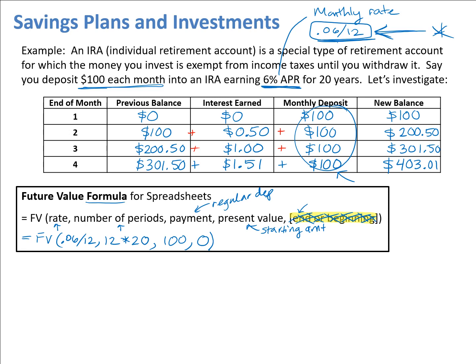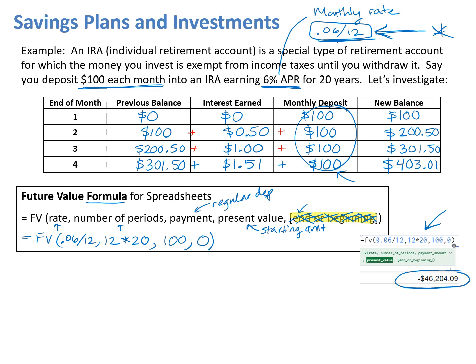I've gone ahead and done this in Google Sheets. Here's a screenshot showing that formula entered in with the equals sign at the beginning. The spreadsheet returned negative $46,204.09. Spreadsheets display future value as a negative — just ignore the negative sign for our purposes. After 20 years, you're going to have $46,204.09 saved in your IRA.